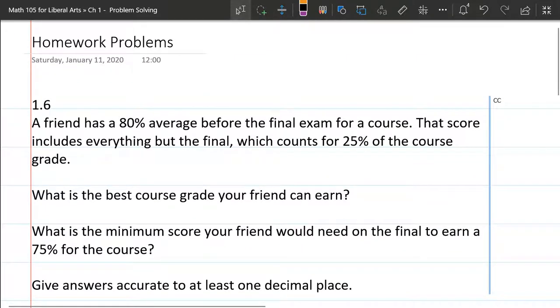We're looking at problem 1.6, and this is a weighted average score. Nowhere in here does it say weighted average, so it's a little bit tricky.